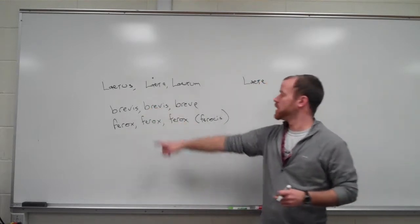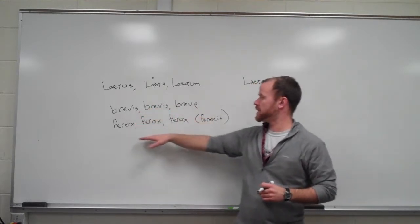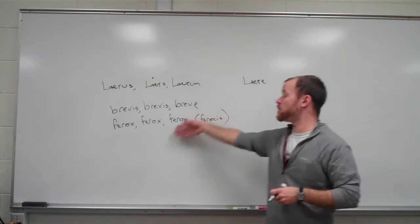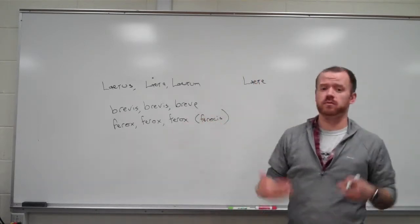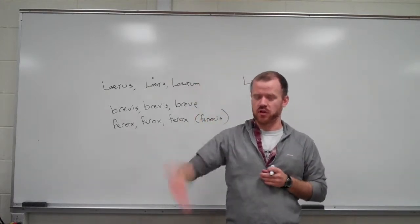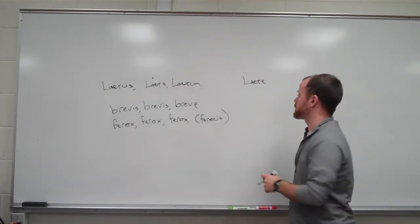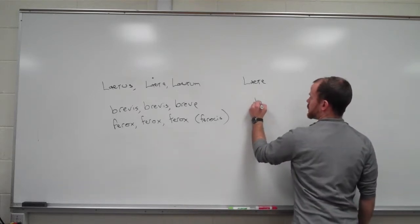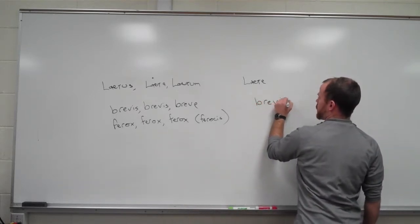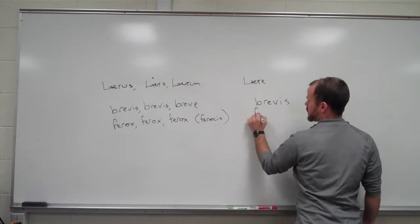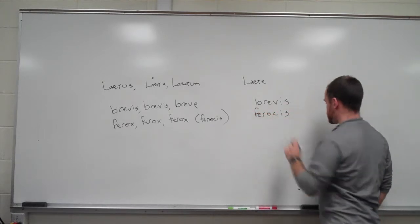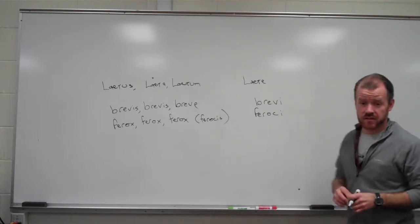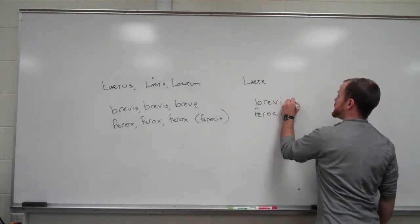the is is, and then x is being repeated. And these ones also will change into adverbs with a simple subtraction of an ending and addition of another one. So all we have to do is we take our genitive form, brewis, ferocis. You chop off not the entire ending, but just the s, and you add t-e-r.